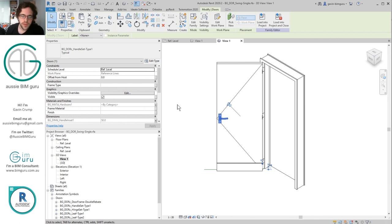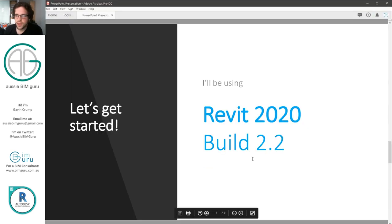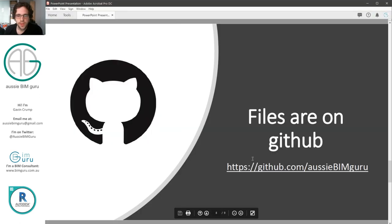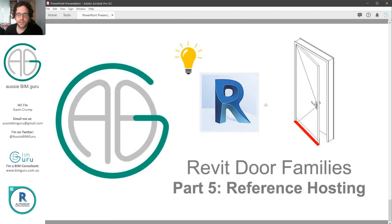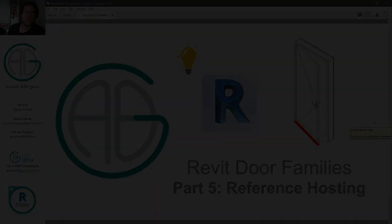That's pretty much it for this video. In the next part we're going to look at the label parameter and show how we can swap over hardware sets at the project level, which is really important. The files are on GitHub so definitely download those. I look forward to seeing you in future videos — if you're not already subscribed feel free to do so, I make about two videos a week. Thanks, take care.